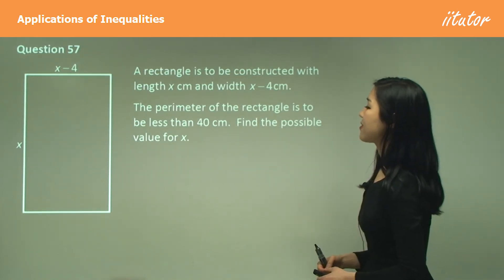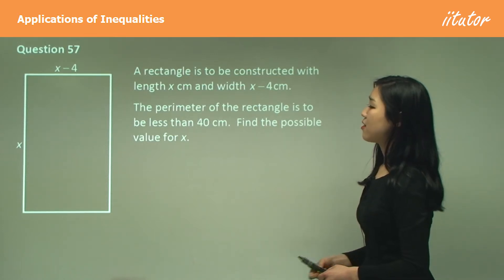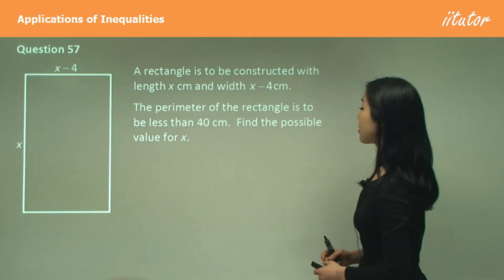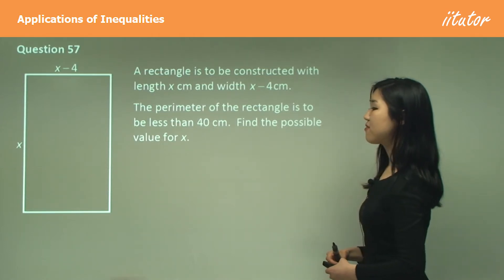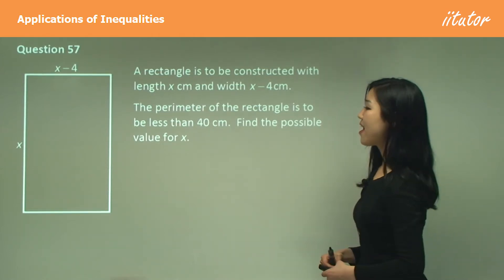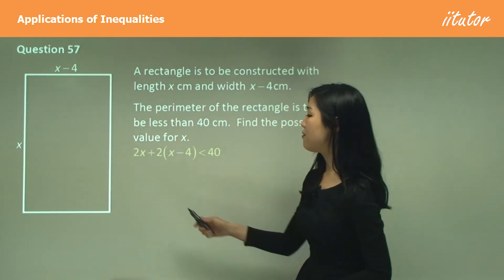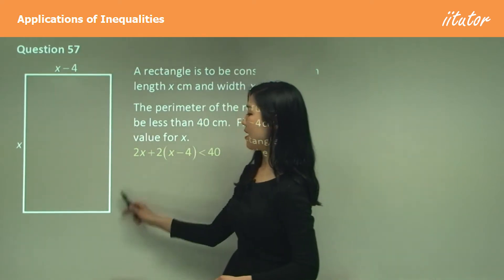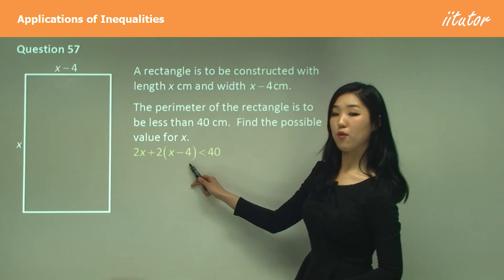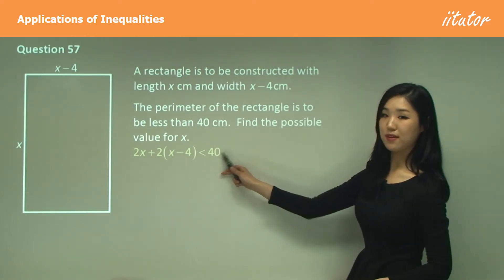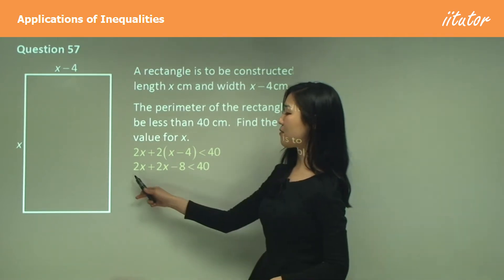Question 57: a rectangle is constructed with length x centimeters and width (x−4) centimeters. The perimeter must be less than 40 centimeters — find the possible values of x. The perimeter is 2(x) + 2(x−4), which must be less than 40.